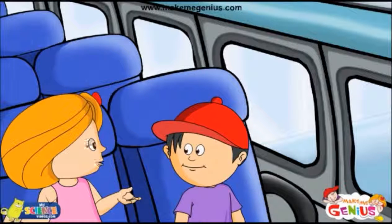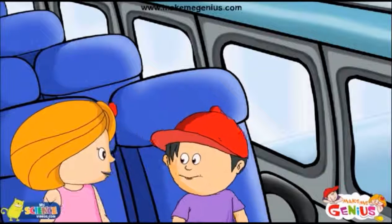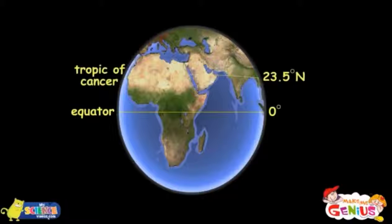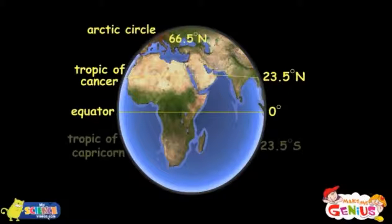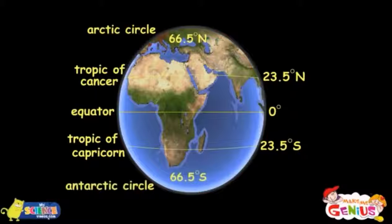Do you know at what degree they lie? The Tropic of Cancer is 23.5 degrees north of the equator, and the Arctic Circle is 66.5 degrees north of the equator. The Tropic of Capricorn is 23.5 degrees south of the equator, and the Antarctic Circle is 66.5 degrees south of the equator.